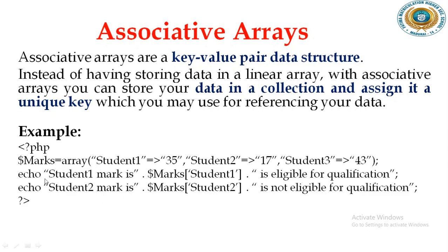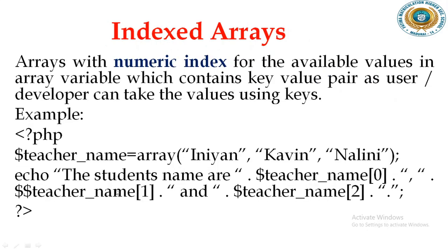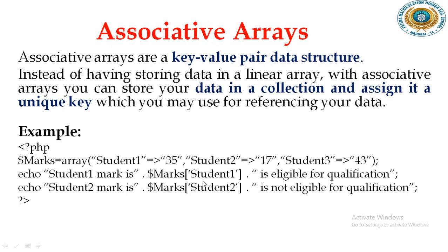We are going to write two statements: echo "Student 1 mark is" . $marks["student1"]. How to refer - the name of the array along with the indexed value. The name of the array is marks, and the key is student1. So student1 mark is 35 - eligible for qualification. Student2 mark is 17 - failure, not eligible.